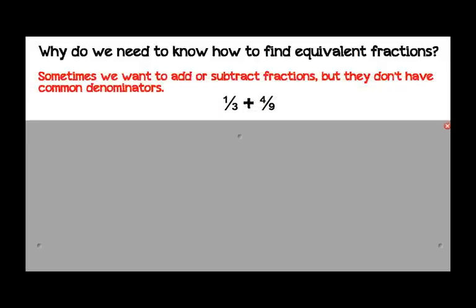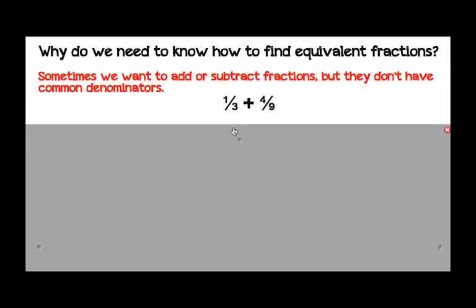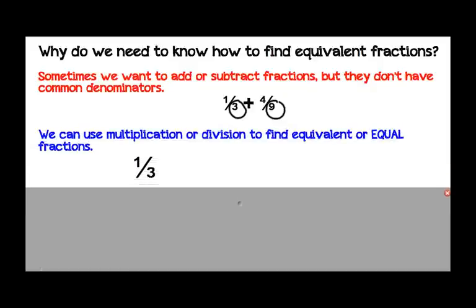So why do we need to know how to find equivalent fractions? Sometimes we're going to want to add fractions or subtract fractions, but they don't have common denominators. So in this problem, we have a denominator of 3 and a denominator of 9. We know that those need to be the same in order to add them. So we can use multiplication or division to find equivalent or equal fractions. So here we would take this one-third and we would change it so that it matched the fraction over here.